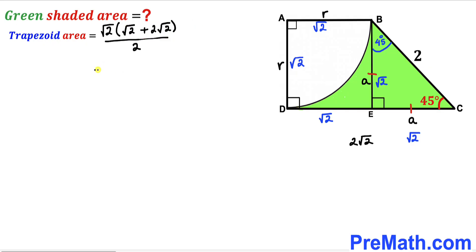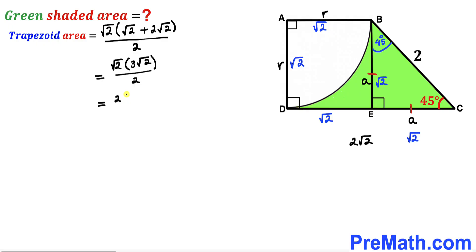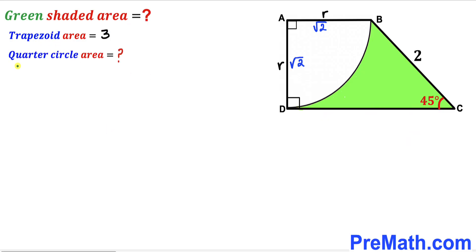Inside the parenthesis we have √2 + 2√2 = 3√2. So the expression becomes √2 × 3√2 / 2. Since √2 × √2 = 2, this gives 2 × 3 / 2 = 3. So the area of the trapezoid is 3 square units.